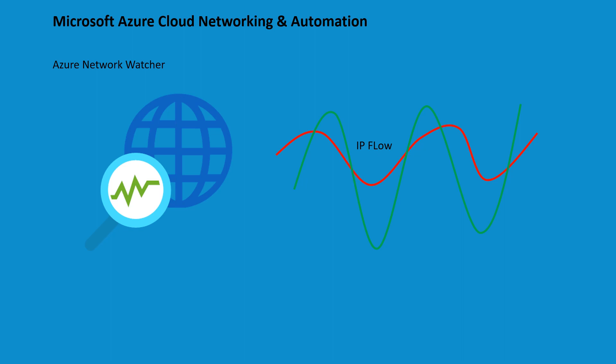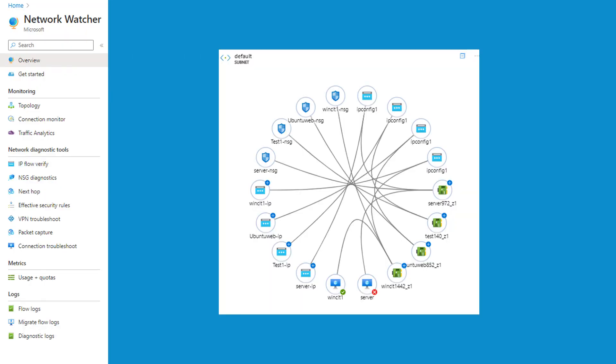In summary, Azure Network Watcher is an essential tool for managing and troubleshooting the network infrastructure in Azure IaaS deployments. It provides the necessary visibility and diagnostics to ensure the health, performance, and security of your IaaS resources. You can navigate to Network Watcher by searching for it in the Azure portal. Let's discuss the first feature: topology visualization.